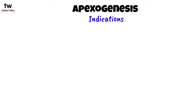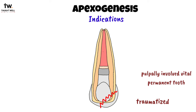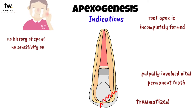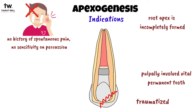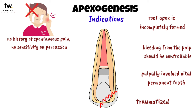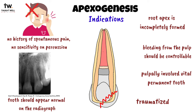Let's see the indications for apexogenesis. It is performed for a traumatized or pulpally involved vital permanent tooth when the root apex is incompletely formed. There should be no history of spontaneous pain, no sensitivity on percussion, the bleeding from the pulp should be controllable, and the tooth should appear normal on the radiograph.